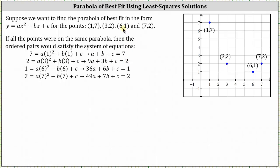Using the third ordered pair (6, 1), we get 36a plus 6b plus c equals 1. And using the ordered pair (7, 2), we get 49a plus 7b plus c equals 2.